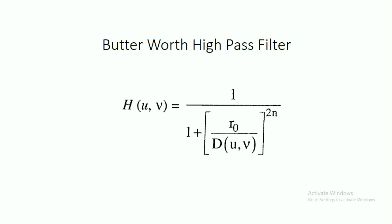Here is the transfer function of the Butterworth high pass filter, which is given as H(u,v) = 1/(1 + [r₀/D(u,v)]^(2n)).